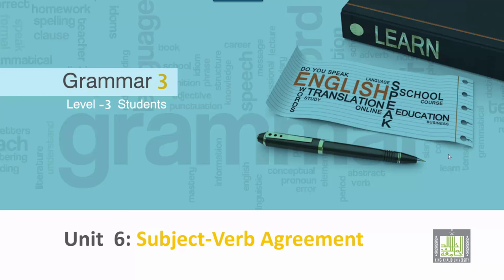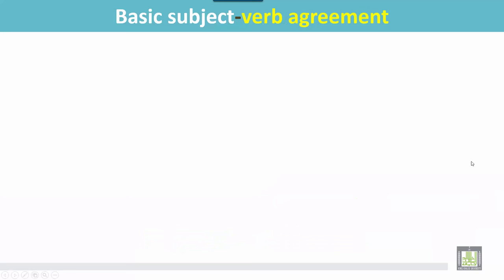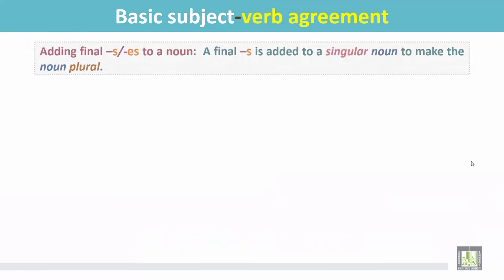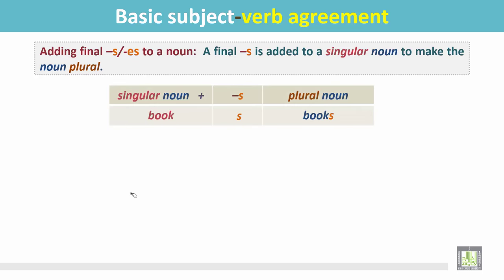Grammar 3 for level 3 students, unit 6: subject-verb agreement. Basic subject-verb agreement — adding final S or ES to a noun. A final S is added to a singular noun to make the noun plural. See the table.